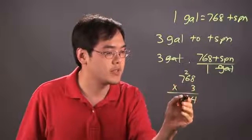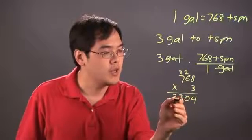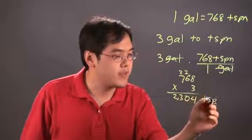3 times 6 is 18 plus the 2 is 20. 3 times 7 is 21 plus the 2 is 23. So really, 3 gallons amounts to 2,304 teaspoons.